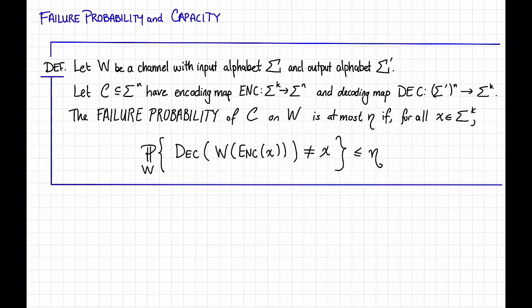Since w is a memoryless channel — that is, it corrupts each symbol independently — we can't hope to always succeed. Bob can't hope to always recover Alice's message, because there is some small but positive probability that all of the symbols are going to get messed up. So instead of hoping to succeed all of the time, which is what we asked for with adversarial errors, we are instead going to hope to succeed with high probability.